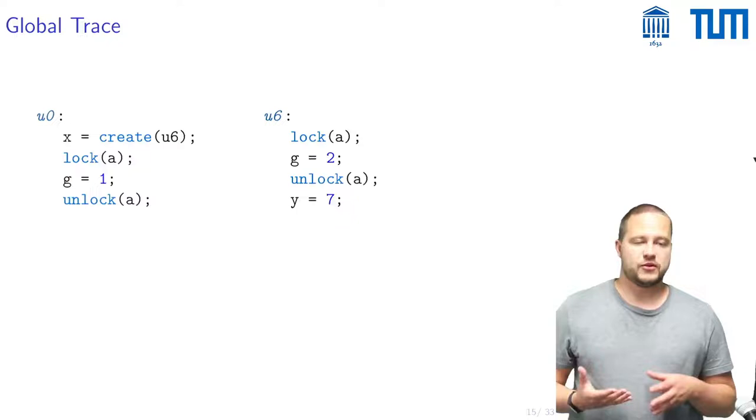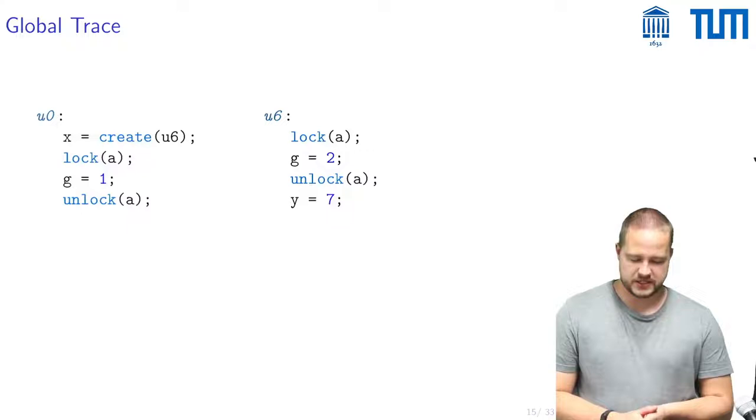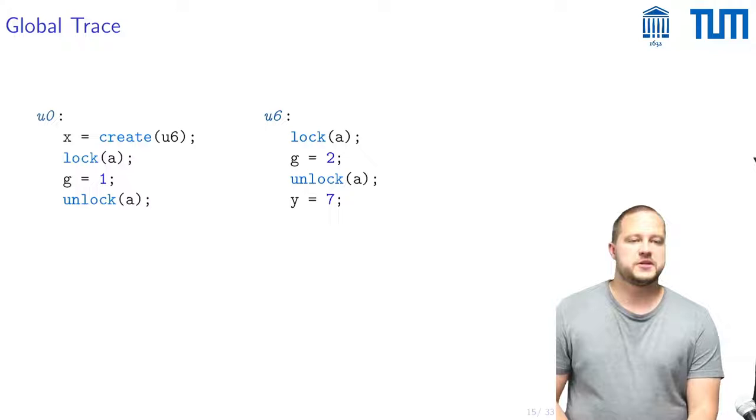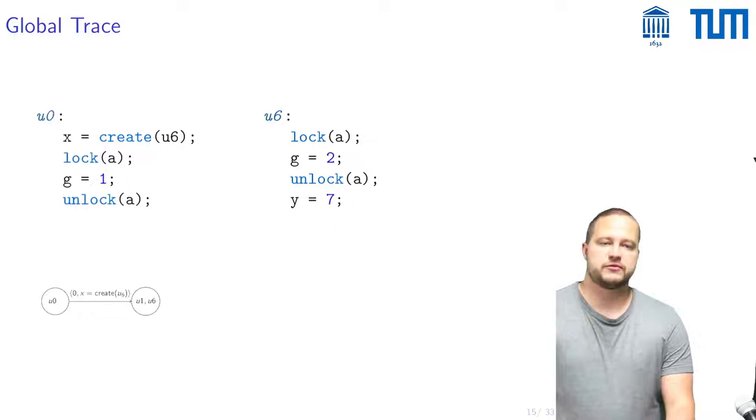Before we talk about local traces let's maybe talk about global traces and one might choose to represent the global trace maybe as simply a sequence of executed edges that are always labeled with which thread took them.